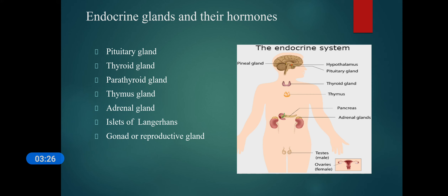Here are some names of endocrine glands you can see on screen: pituitary gland, thyroid gland, parathyroid gland, thymus gland, adrenal gland, islets of Langerhans, and gonads or reproductive glands. We will now discuss each of these glands — their location, function, and what hormones they secrete.